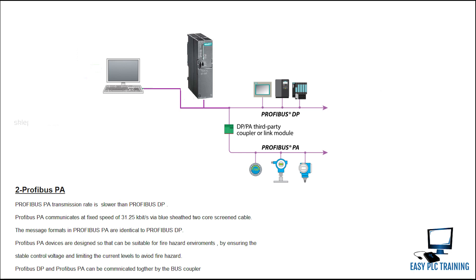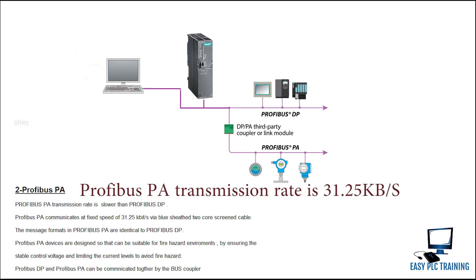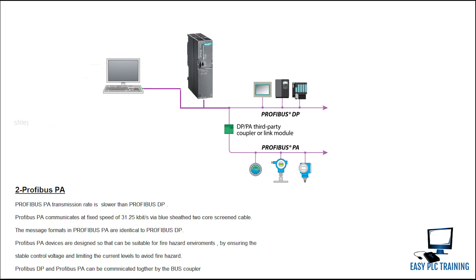The second variant is PROFIBUS PA. PROFIBUS PA has a transmission rate that is slower than PROFIBUS DP. It communicates at a fixed speed of 31.25 kbps via a blue sheath, 2-core screened cable. The message formats in PROFIBUS PA are identical to those of PROFIBUS DP.